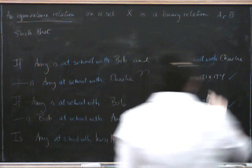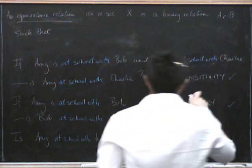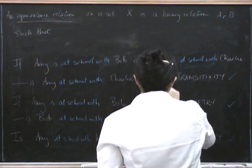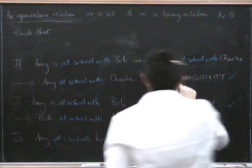So first we need transitivity. What transitivity says is that for all A, B, and C in X, remember what it said?